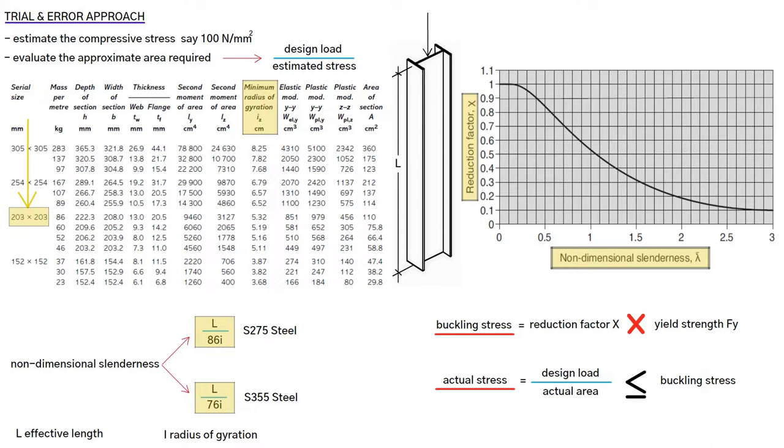If it is higher, then the column will buckle, therefore, we should select a bigger section. If it is substantially lower, then we should select a smaller section, in order to improve economy.